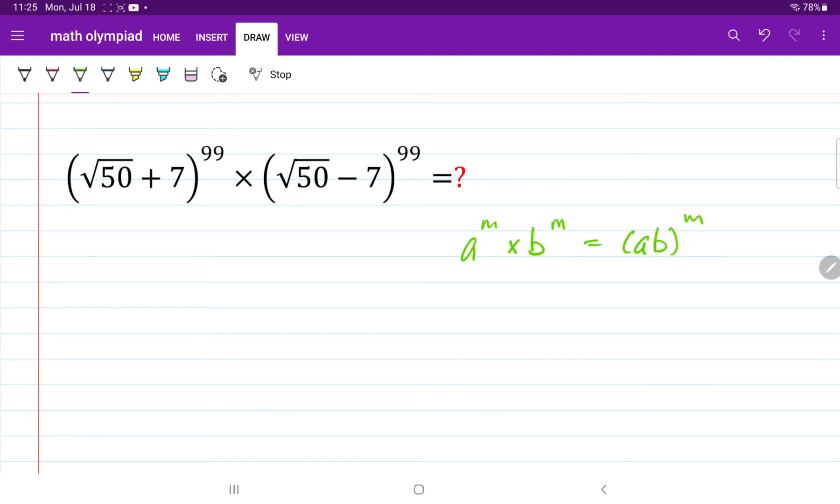Let's go ahead and apply this to our equation. We have square root of 50 plus 7 to the power of 99 multiplied by square root of 50 minus 7 to the power of 99, which is equal to the product of these two: square root of 50 plus 7 times square root of 50 minus 7, both raised to 99.